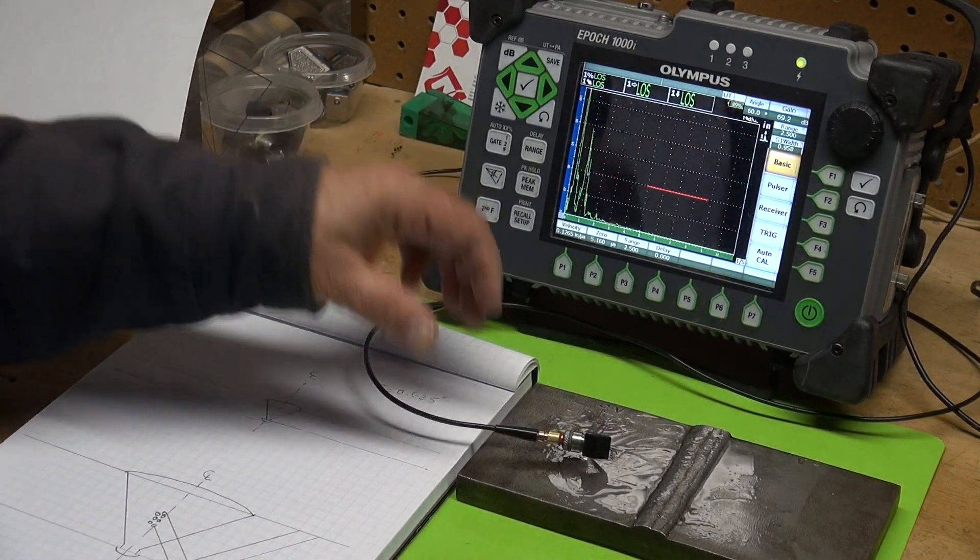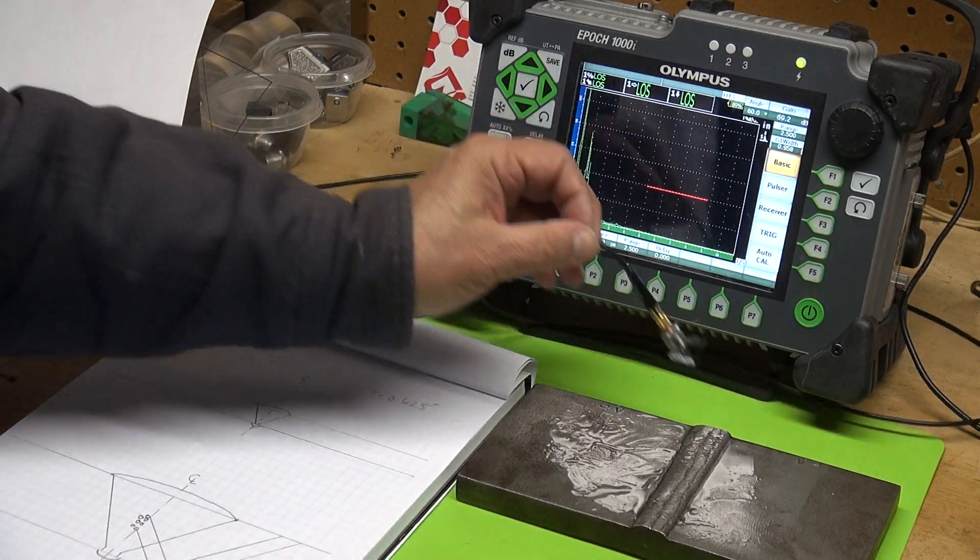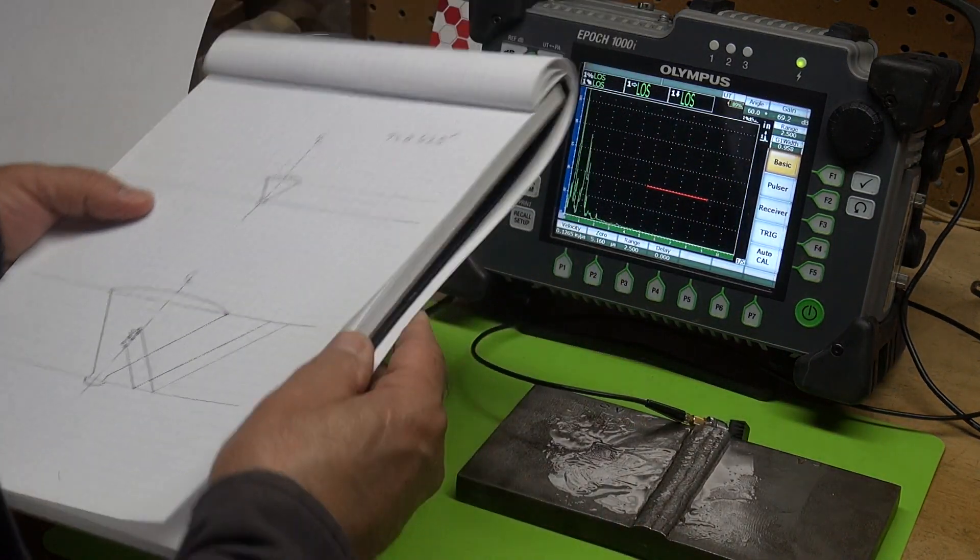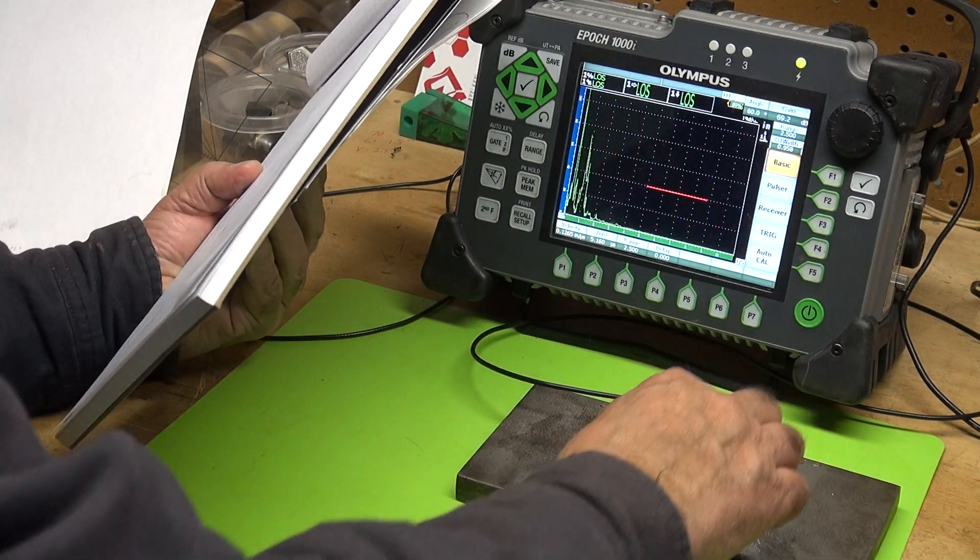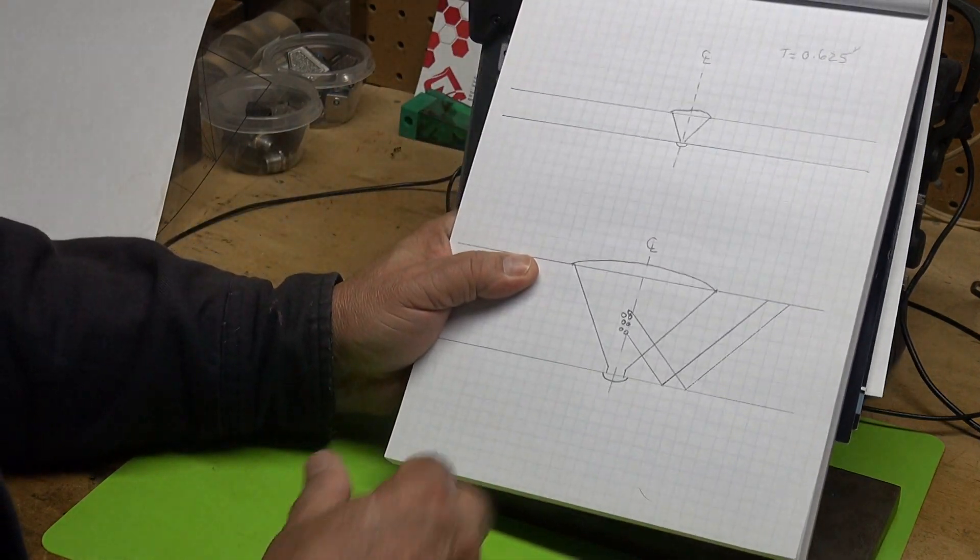I want to take a look at a weld with porosity in it and try to do a through wall sizing of the porosity. This weld does have some cluster porosity right in the middle here.